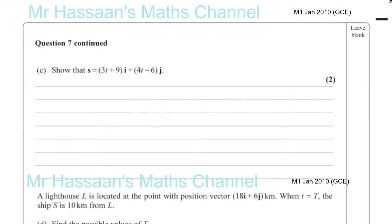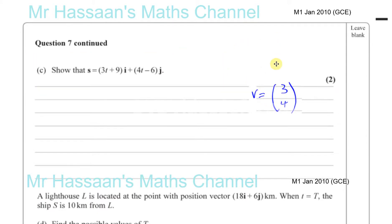Okay, now for question 7 part C. It says show that S equals 3T plus 9I plus 4T minus 6J. This is dependent on the questions from the page before. They told us for this ship that when time is zero its position vector is 9I minus 6J, and we know that its velocity is given by 3I plus 4J.